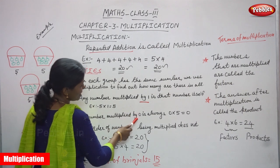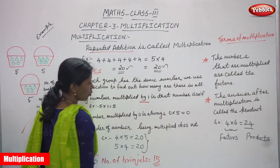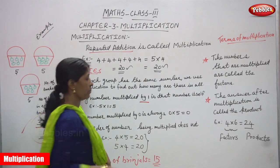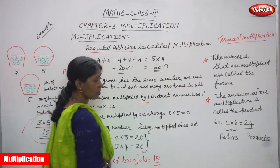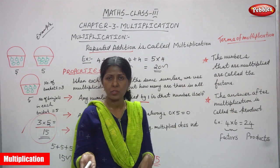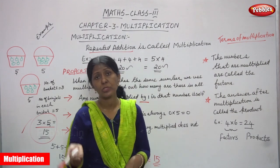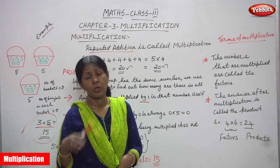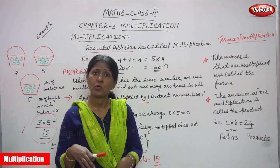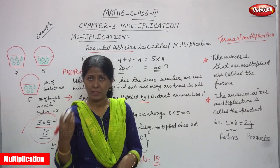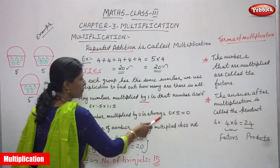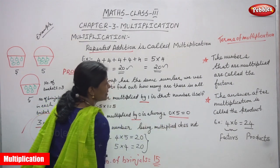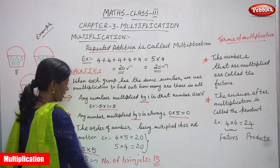Third property: any number multiplied by 0 is always 0. For example, 0 into 5 equals 0, 0 into 10 equals 0, 0 into 100 equals 0, 0 into 1000 equals 0, 0 into 200 equals 0, 0 into 40 equals 0. Any number multiplied by 0 is always 0.